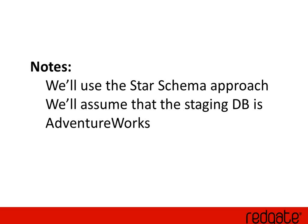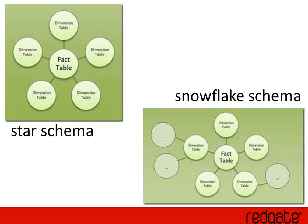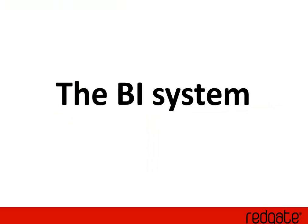A few things I'd like to mention as notes. We will be using the Star Schema approach. I know some people are very in favor of the Snowflake approach, but for this example we'll use the Star Schema. We'll also be using the AdventureWorks database as our staging database. There is a whole debate about which of the two approaches is better — it depends on your data, how you want to move forward, and whether you want to maintain it at the people layer or the Analysis Services layer.